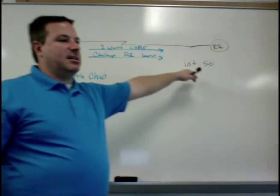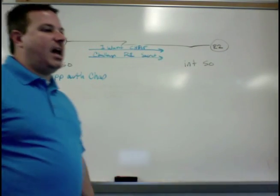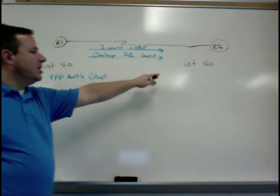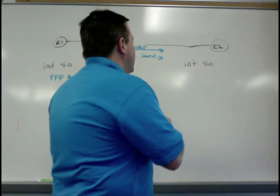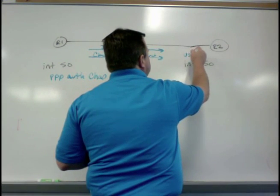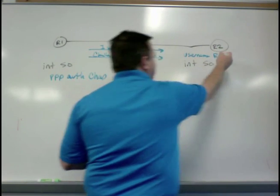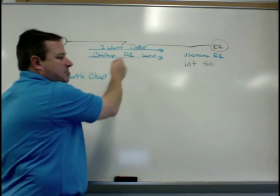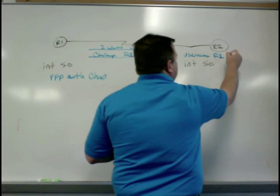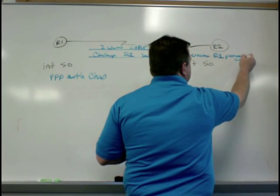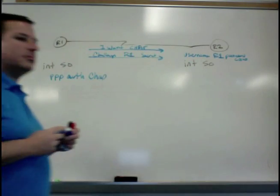So this side gets it. Now, here's the beauty of CHAP. You don't need that sent username. When it gets to the other side, we've already supplied kind of a username. When it gets to the other side, this side's going to look for a username R1. It's going to look for a username that matches the one that was provided, and then a password that goes along with it. Password in Cisco.